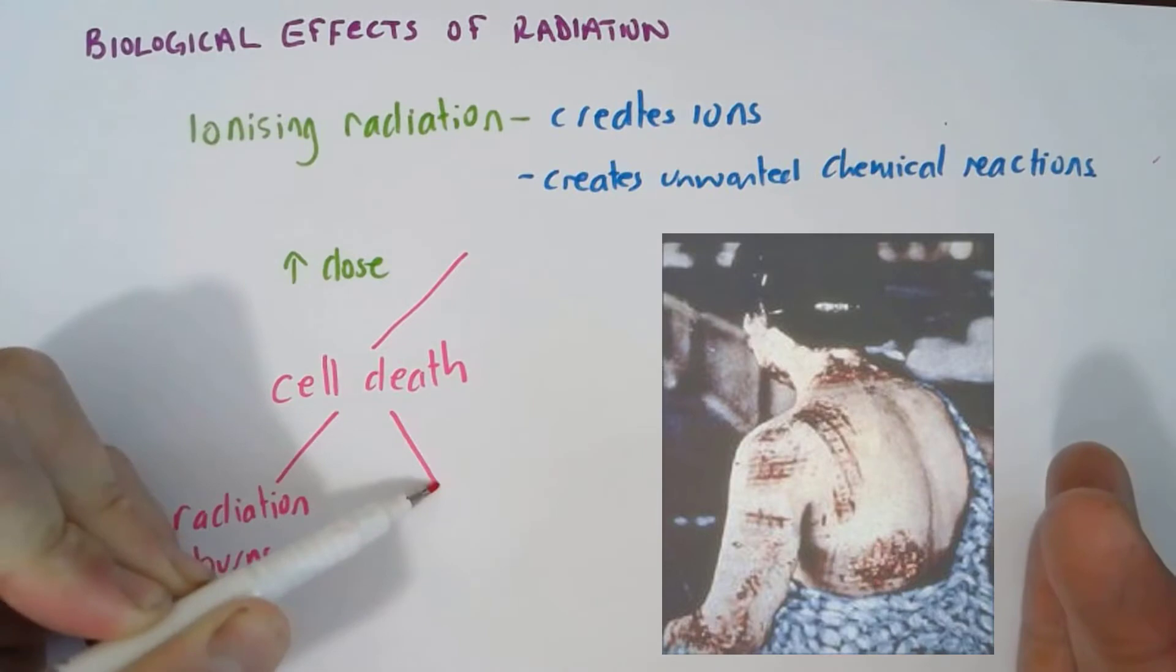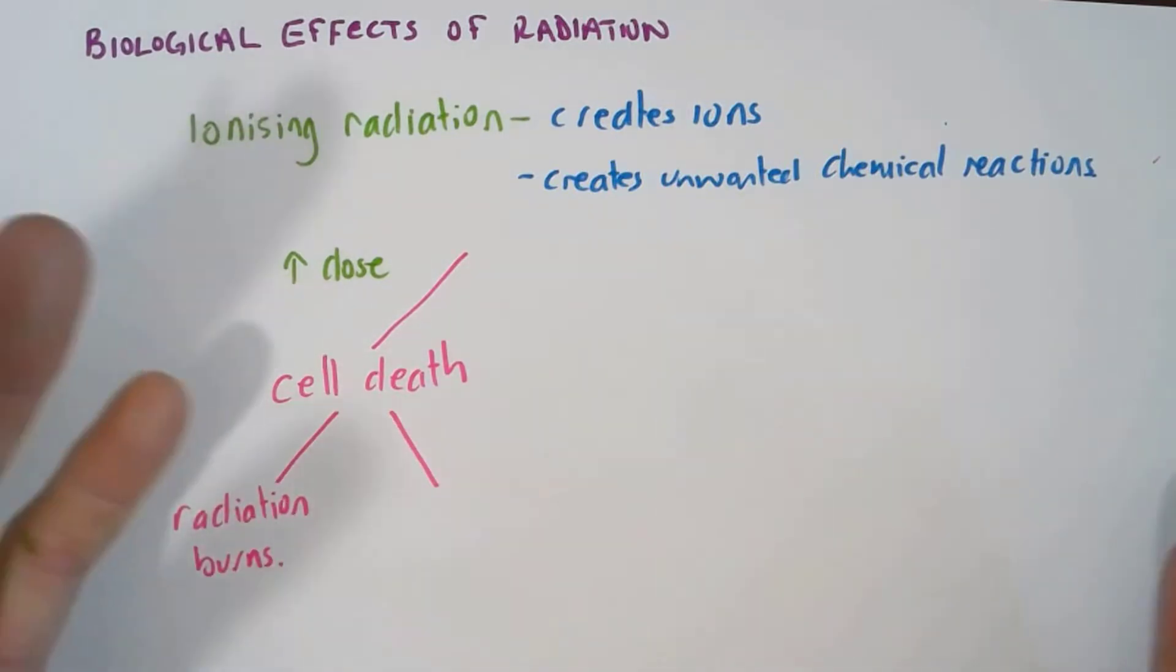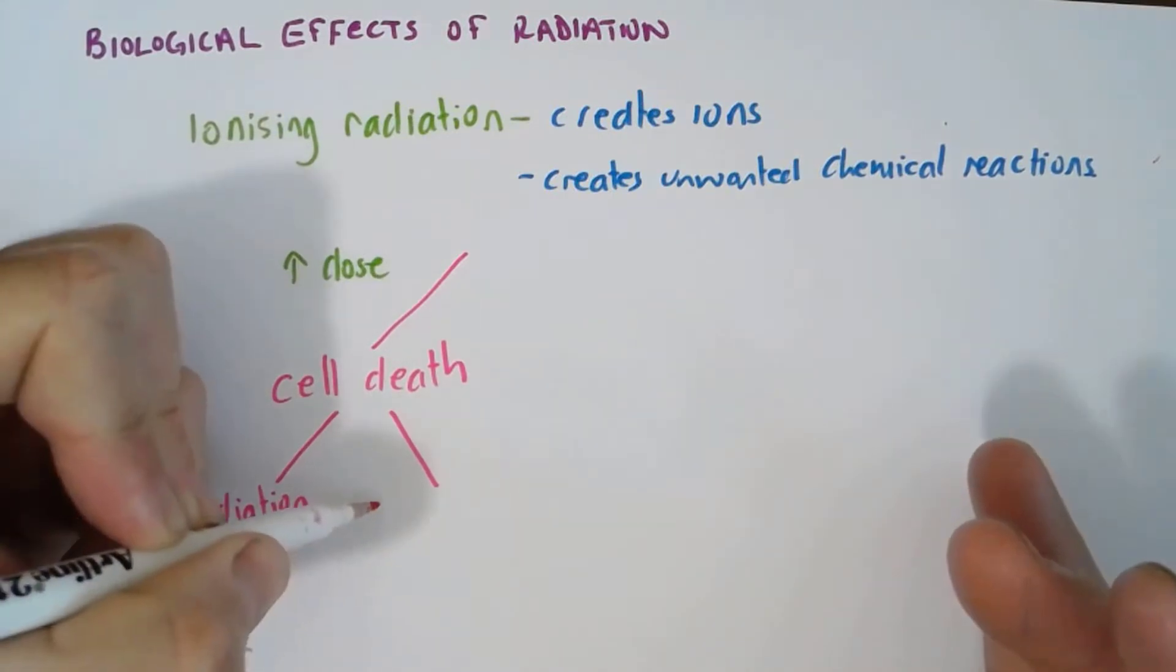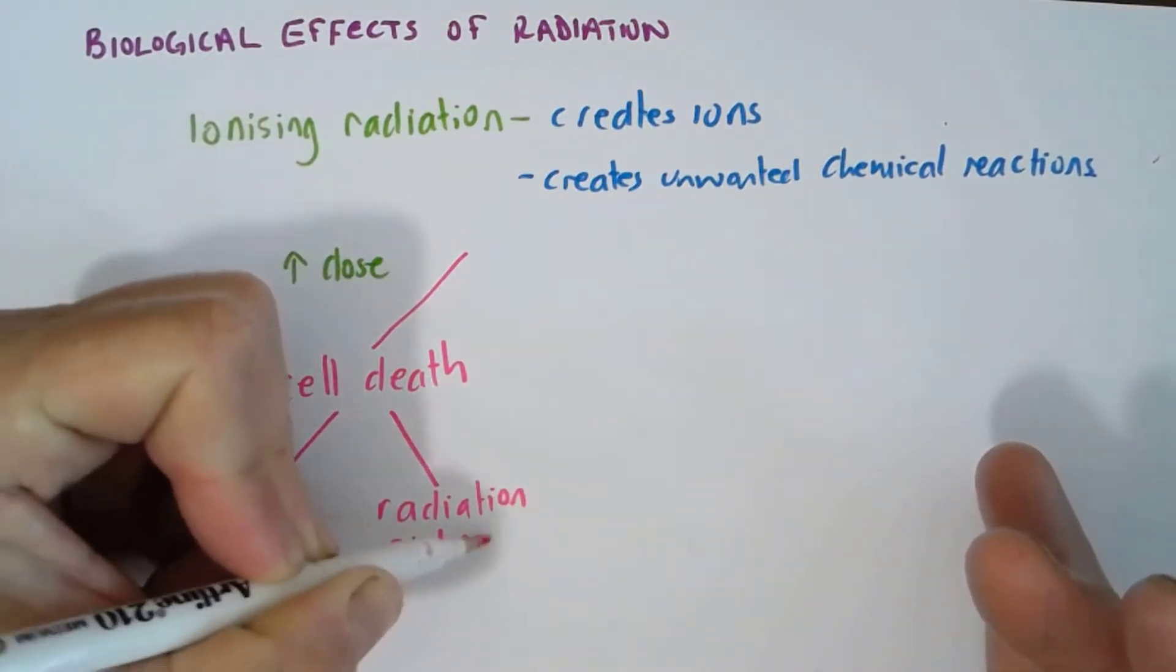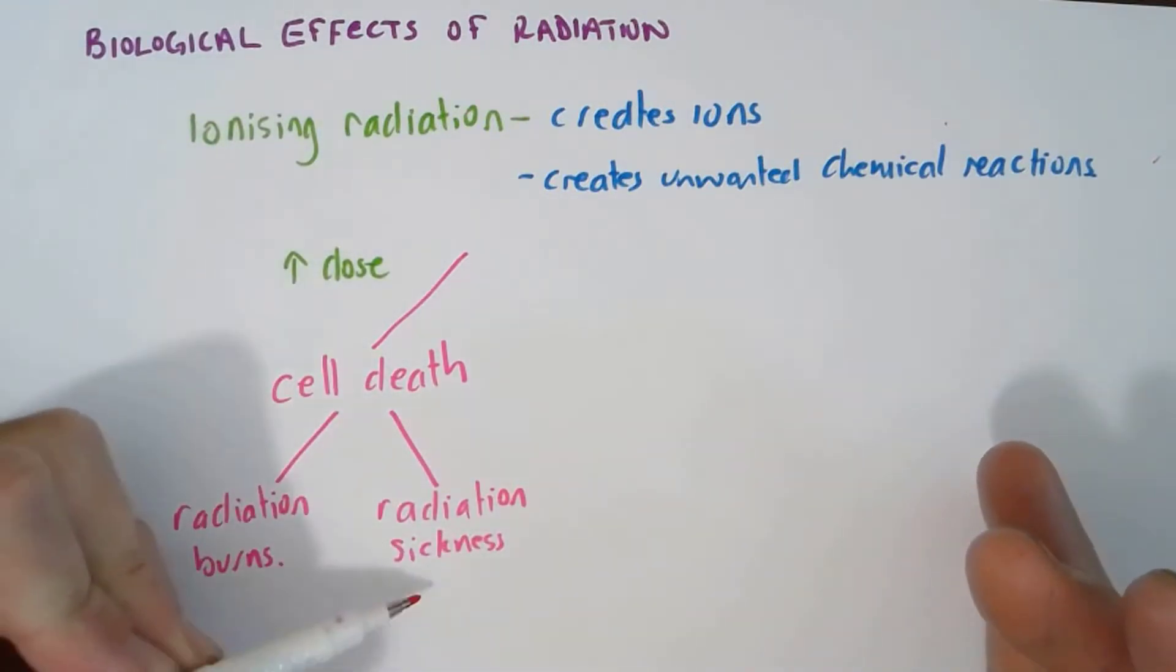If a large number of cells throughout the organism are killed by the ionising radiation, then systemically or across the whole body the organism feels very sick. This is called radiation sickness and this can actually lead to death of the organism.